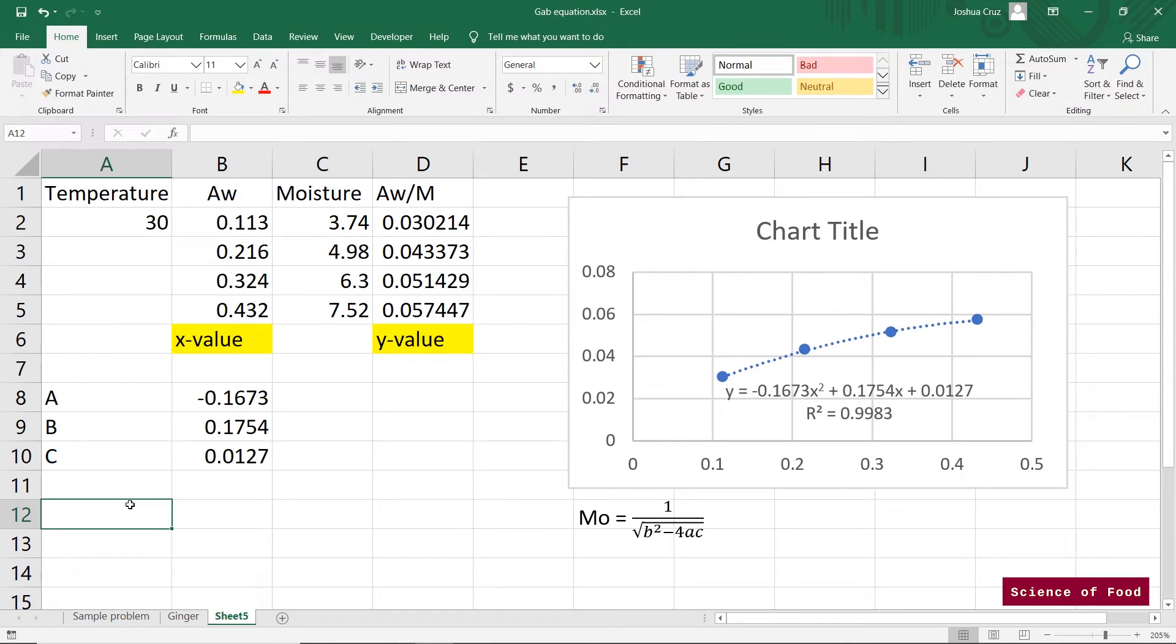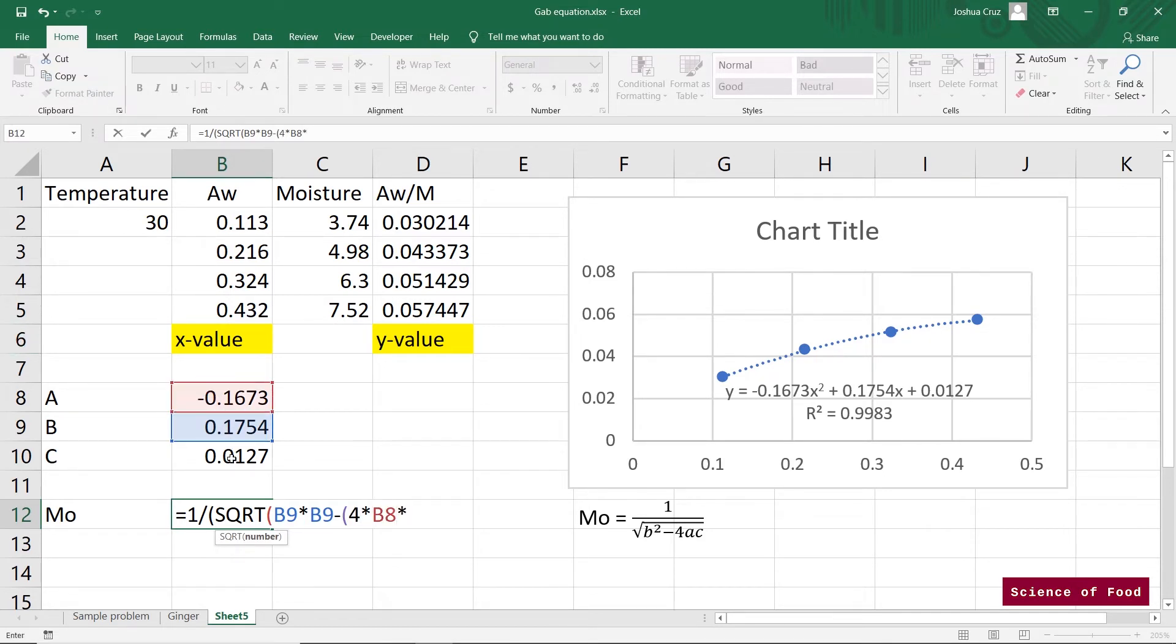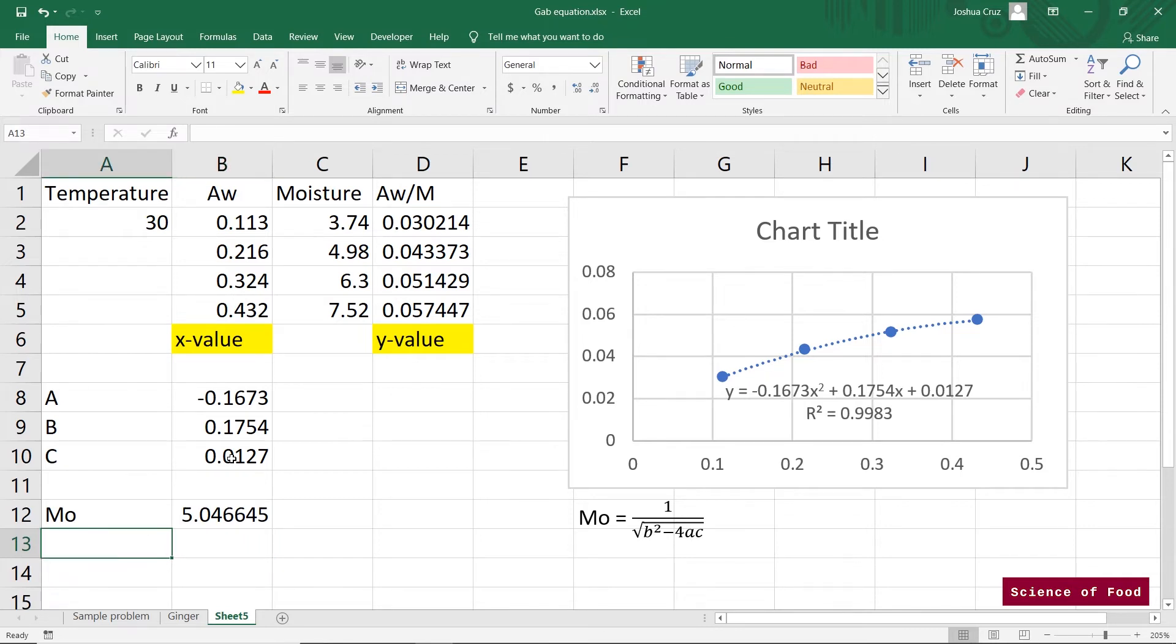So the next thing we need to calculate is the monolayer value. And the monolayer value is depicted by this equation here. We have 1 divided by the square root of b squared. You can put it b9 times b9 minus 4 multiplied by a multiplied by c. So we would have value, monolayer value 5.046645. We will summarize our values later and we'll compare it with what the study got.